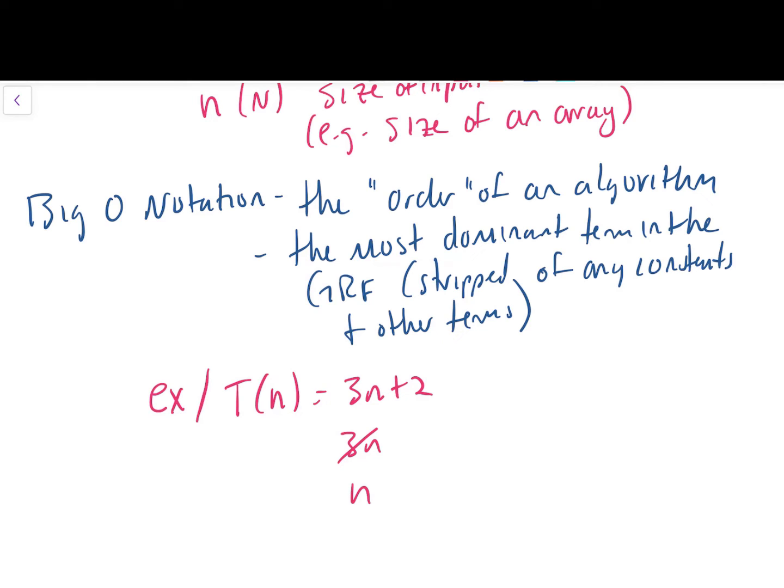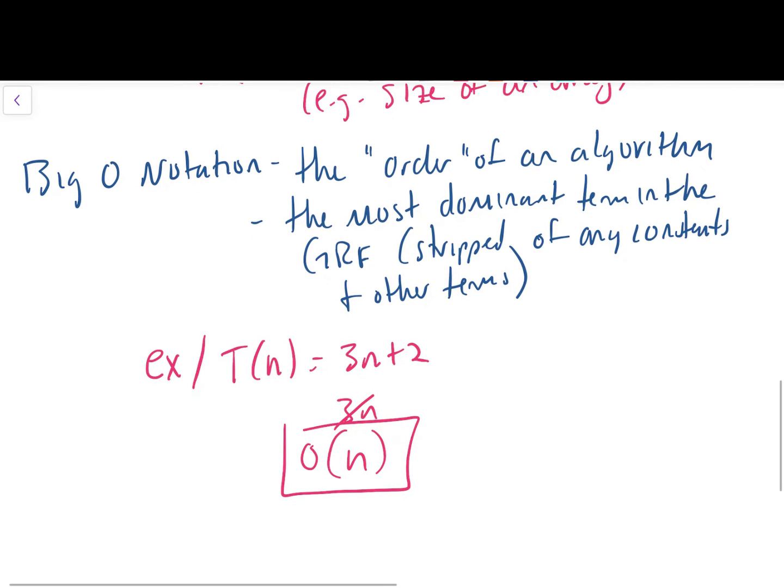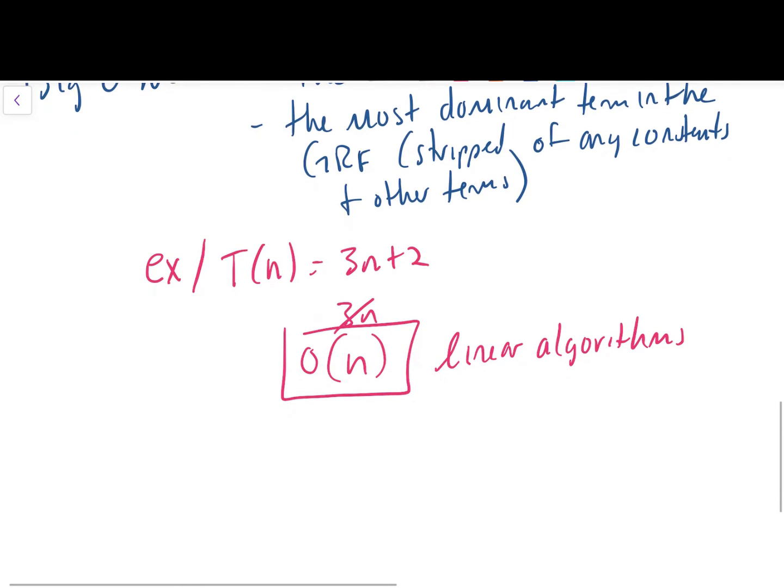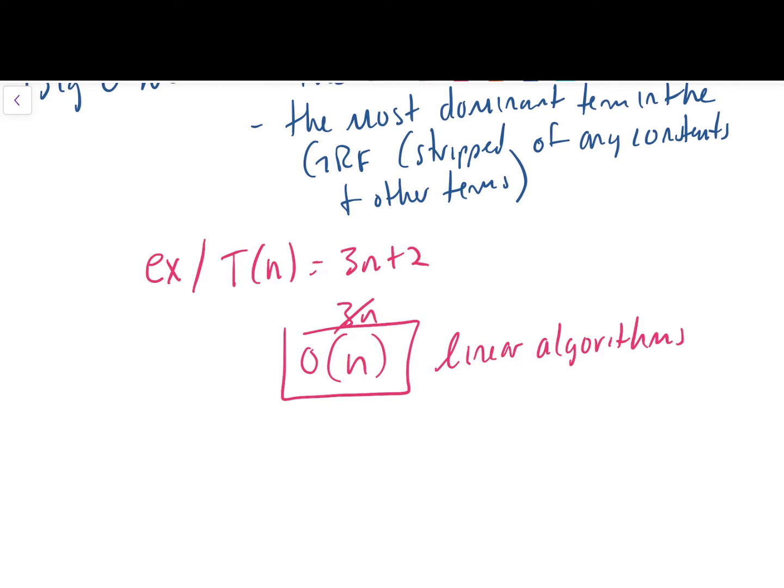And for this example, this was the size or the number of elements of an array. So if the array is really, really big, then the print array has to do a lot more work than if the array only has one or two elements in it. Moving on to big O notation. Big O notation represents the order of an algorithm.